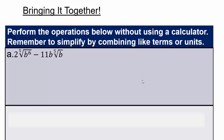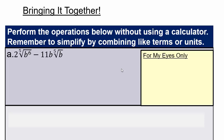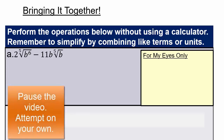Let's bring it together and see if you can combine a whole bunch of different topics. So here we have some radicals and you're asked to subtract them. Remember, you can do this. Just start with your 'for my eyes only' column and simplify the roots and then combine them together. Go ahead, pause the video here, do the problem on your own and then we'll come and discuss it together.